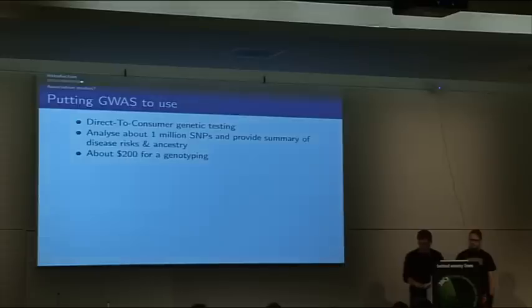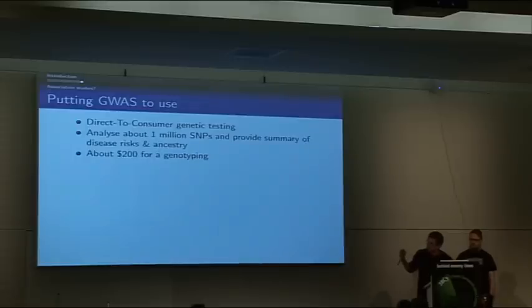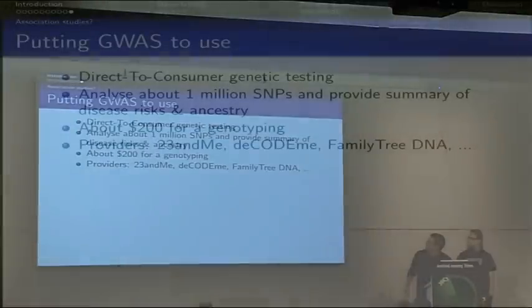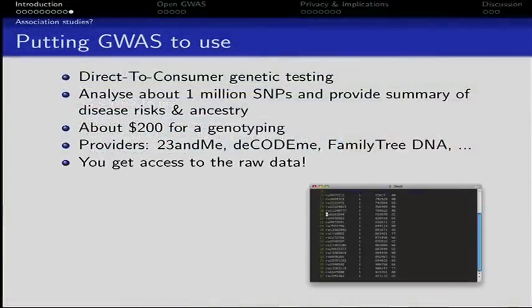Nowadays GWAS can be used by the private customer through direct-to-consumer genetic testing companies — like 23andMe or DecodeMe. They analyze about a million SNPs and provide a summary of disease risks together with ancestry information. It's just 200 bucks. There are a couple of companies doing that, and the best thing is that they send you the raw data — they don't lock it up from you.